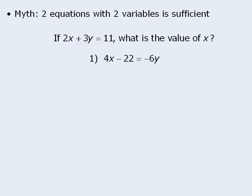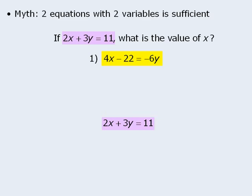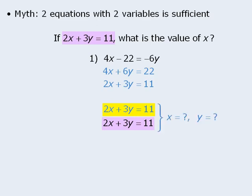Consider this example. We are given one equation with two variables, and statement 1 provides a second equation with two variables. Do we have enough information to answer the target question? The answer is no. If we take the equation from statement 1, rearrange the terms, and divide both sides by 2, we see that the second equation is identical to the first. So while we may have two equations with two variables, the two equations are essentially identical. As such, we cannot solve for x and y, and statement 1 is not sufficient. Watch out for situations where two equations with two variables are essentially identical to one another.